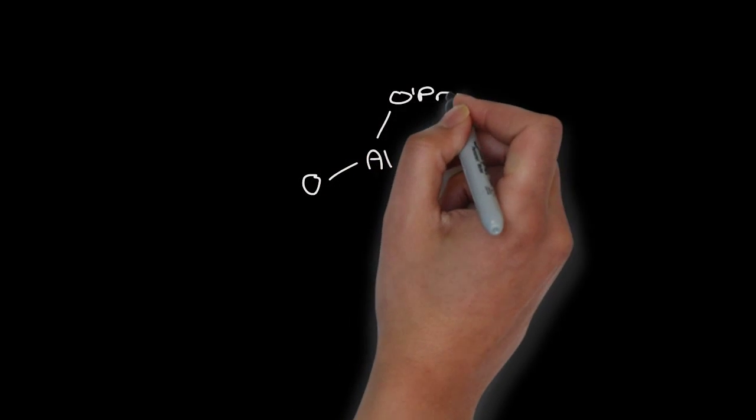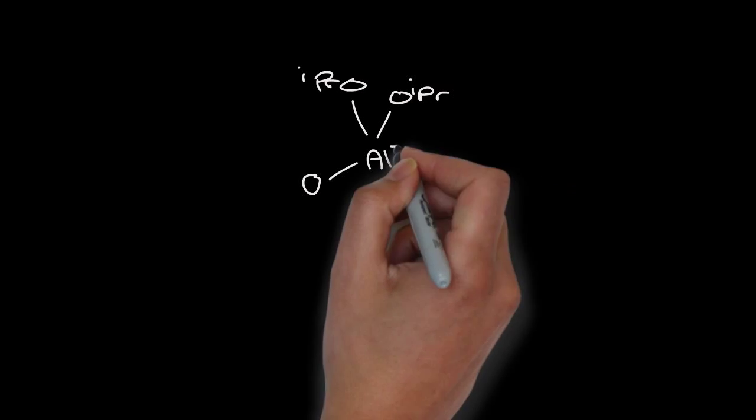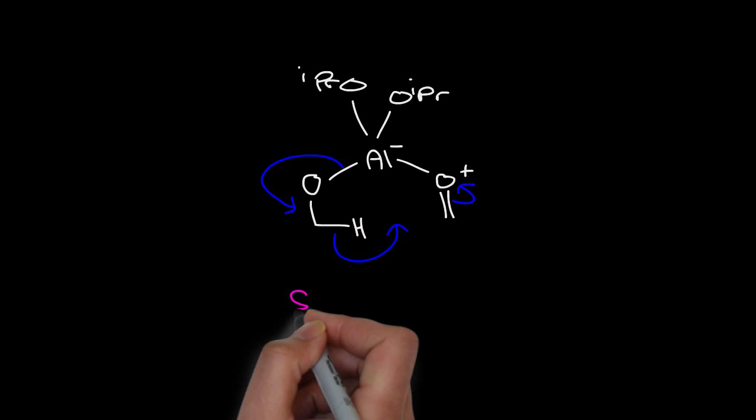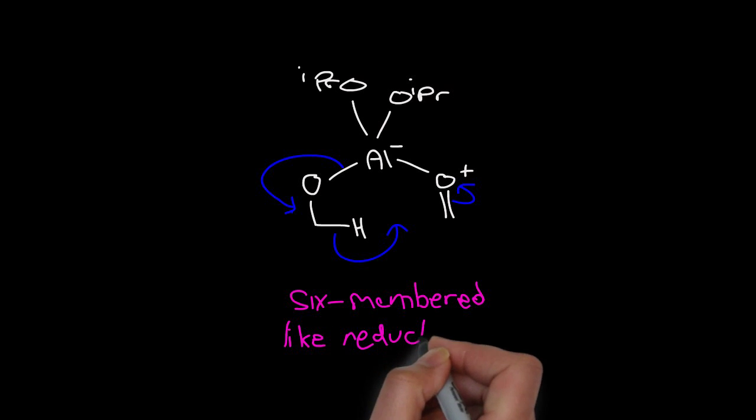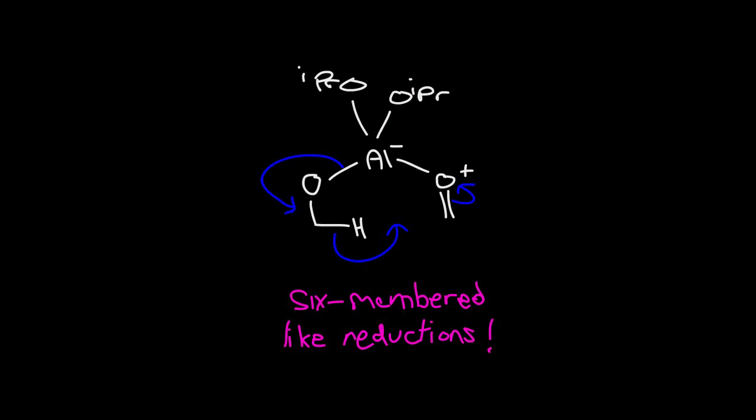There are some, like this aluminum or aluminium-based disproportionation reaction, but that's also a reduction of an aldehyde. Some interesting reductions of carbonyls tend to feature six-membered ring transition states, and that's the subject of another video.